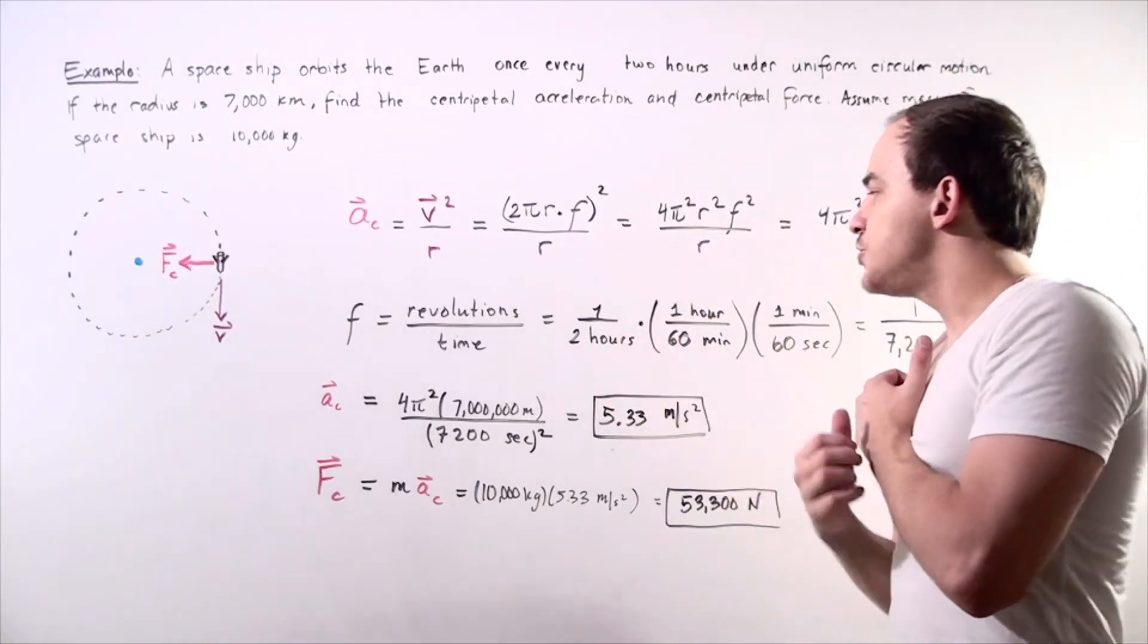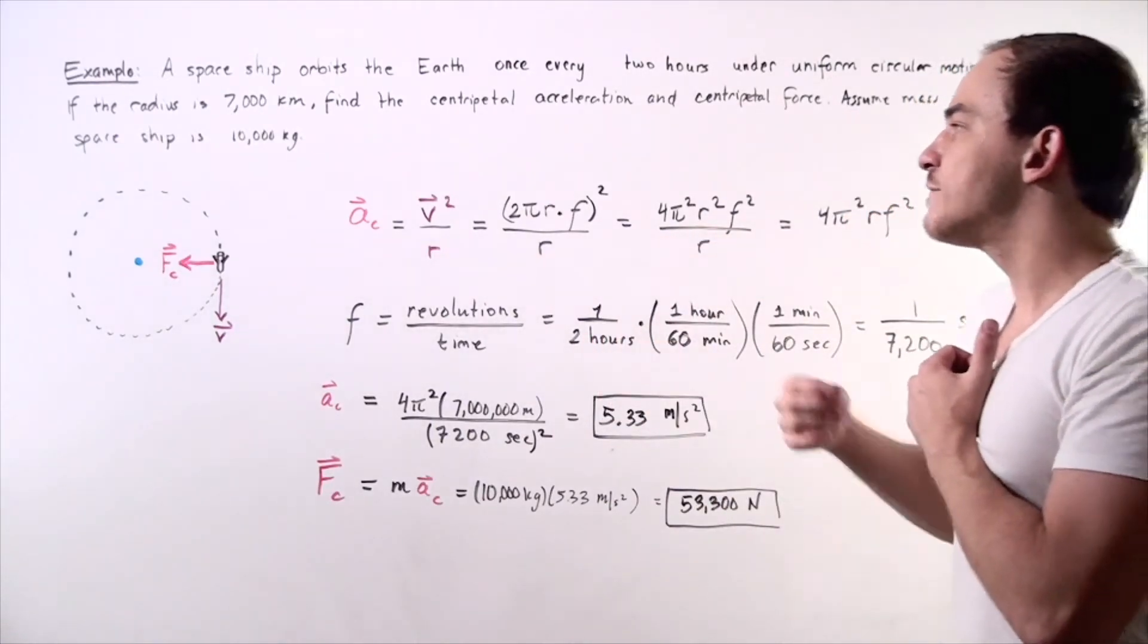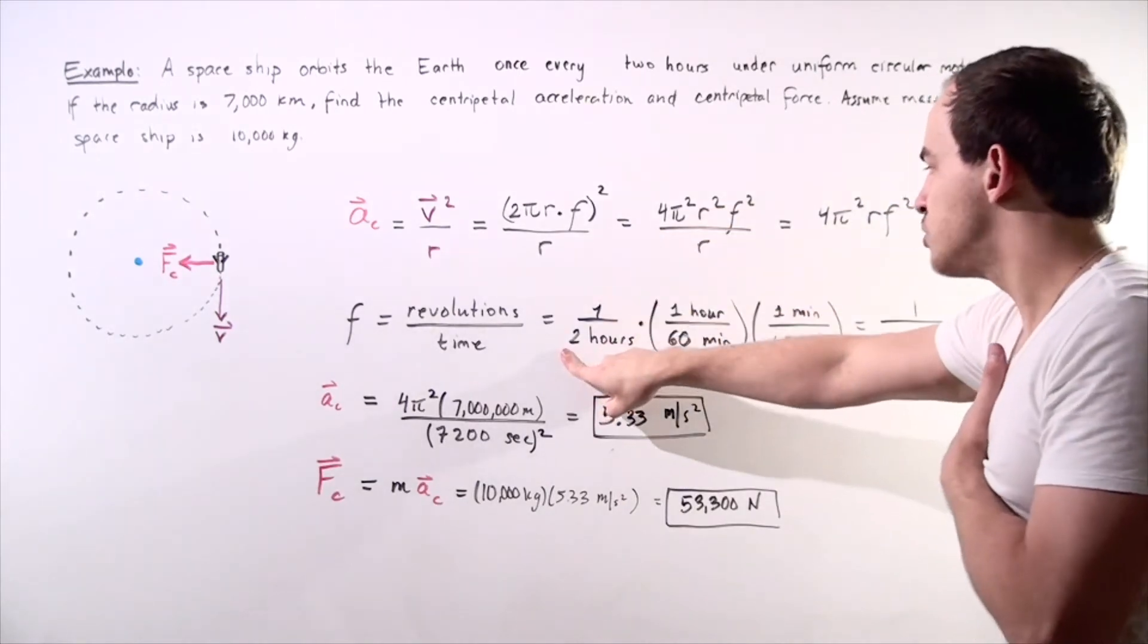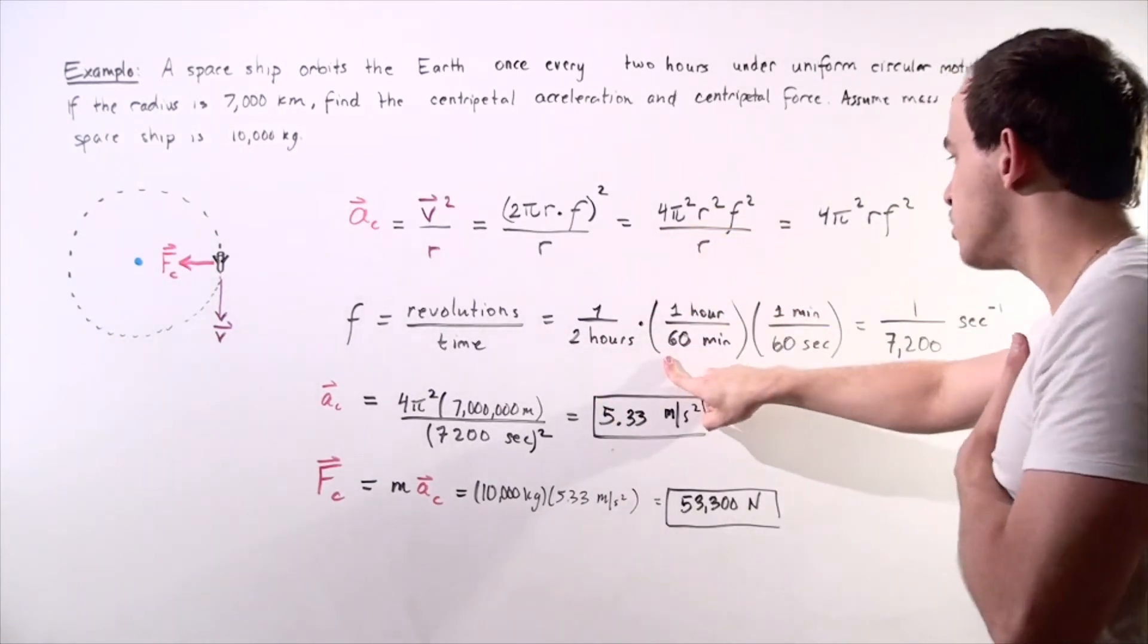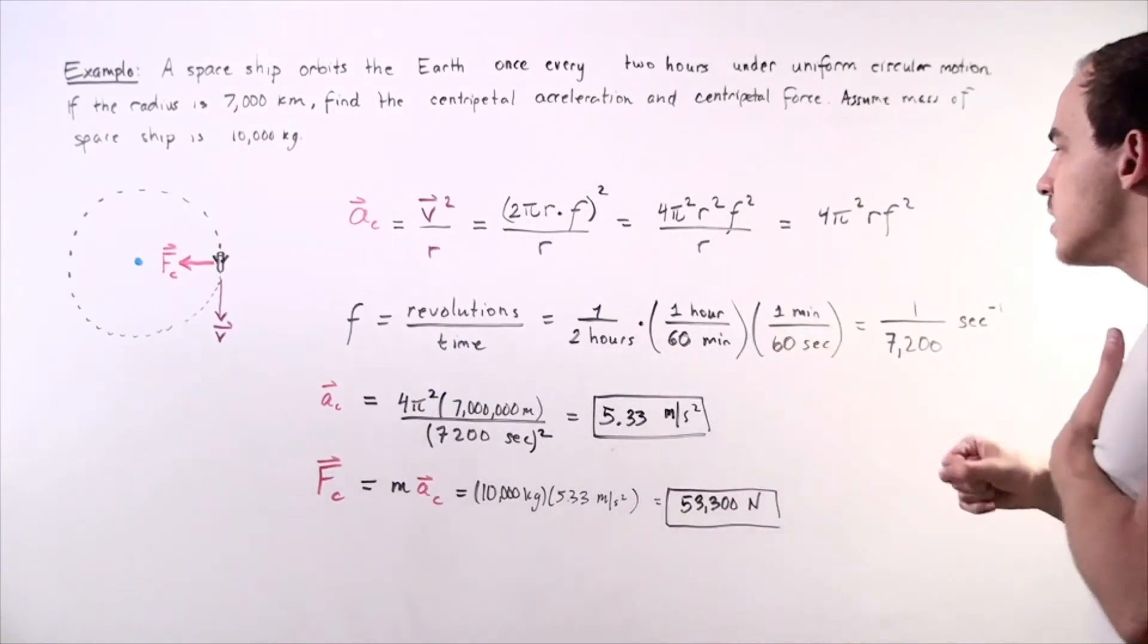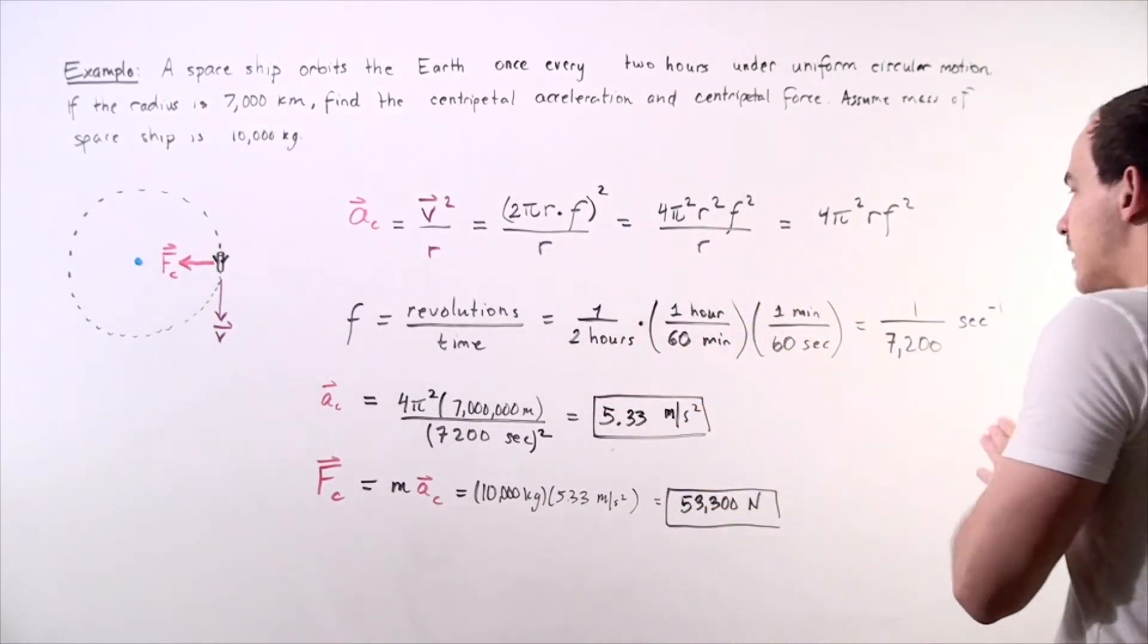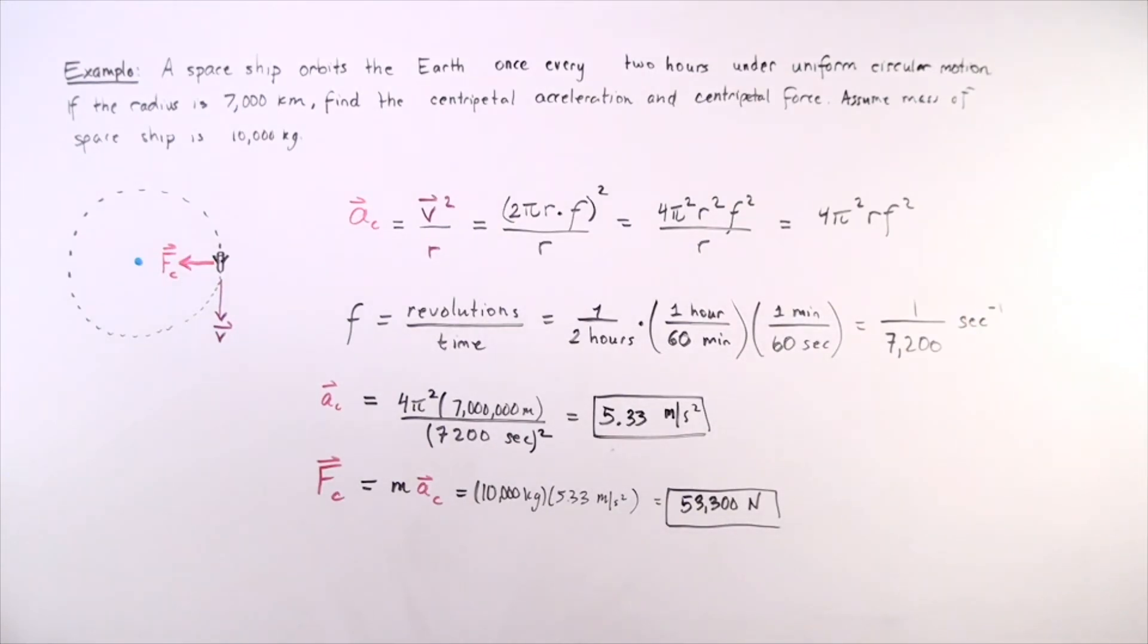We have one revolution every two hours. So we want to convert it to seconds. We have 1 over 2 multiplied by 1 over 60 multiplied by 1 over 60. So we see that the hours cancel, the minutes cancel, and we are left with seconds at the bottom. So we have 1 over 7,200 seconds, where the seconds appears at the bottom.